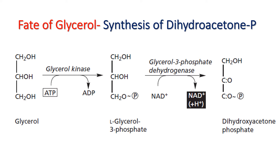Glycerol is glycogenic and it enters the glycolytic pathway after its conversion into glycerol-3-phosphate and then into dihydroxyacetone phosphate. In the first step, glycerol is converted into glycerol-3-phosphate by glycerol kinase enzyme, and during this step one ATP is utilized. Then through the enzyme glycerol-3-phosphate dehydrogenase, L-glycerol-3-phosphate is converted into dihydroxyacetone phosphate, and there is production of one NADH during this step.